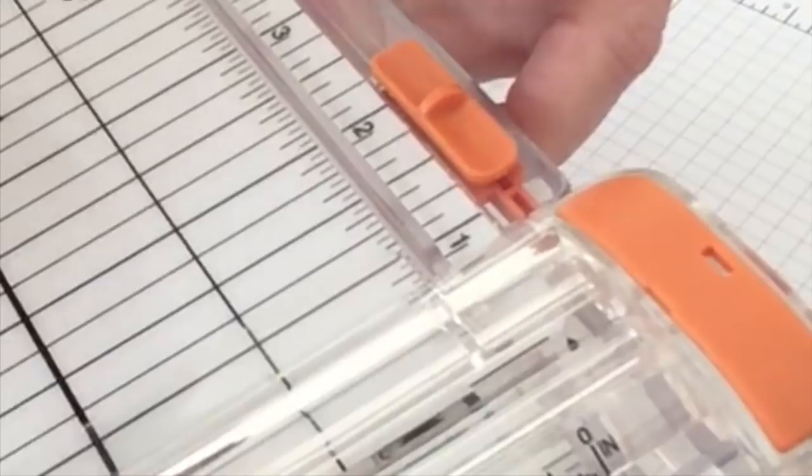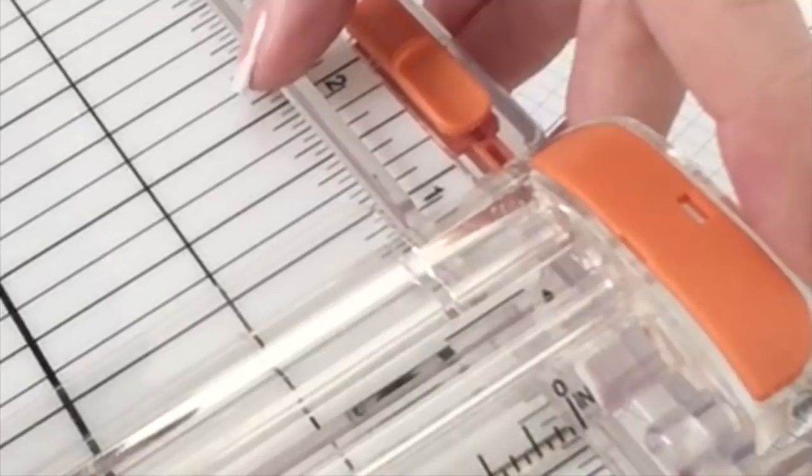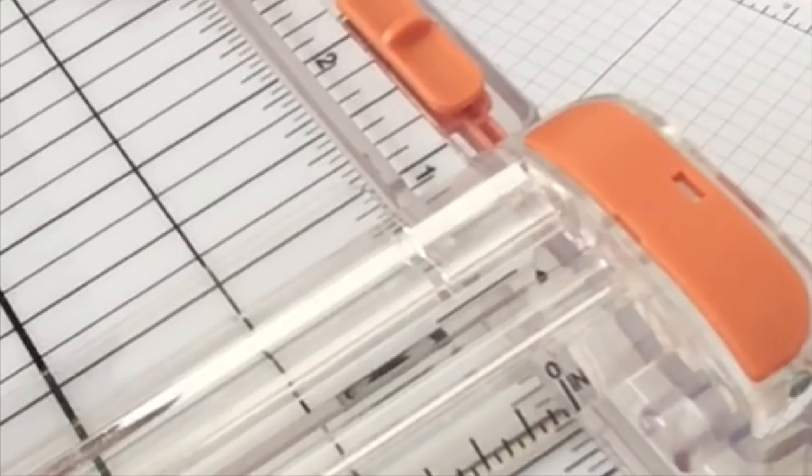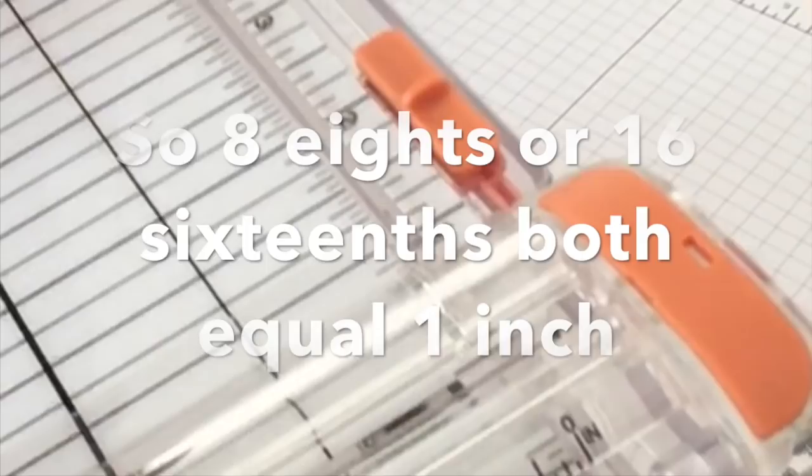But if you look underneath where the two inch mark is between the three, this time you'll see there are smaller increments. So if you count from the two inch to the three inch you've got one two three four five six seven eight nine ten eleven twelve thirteen fourteen fifteen and the three becomes sixteen, so these are sixteenths. So this ruler is good if you do need to go down to sixteenths.